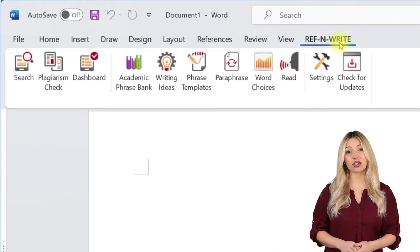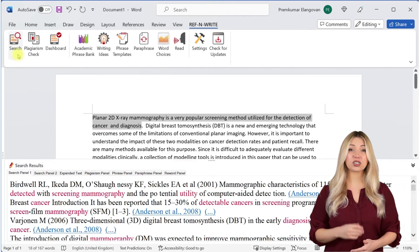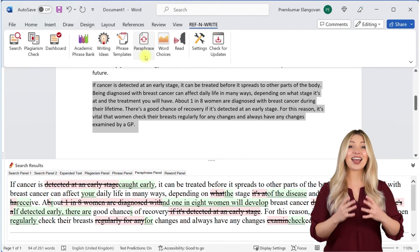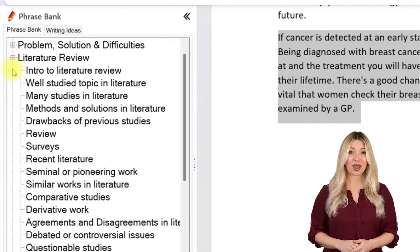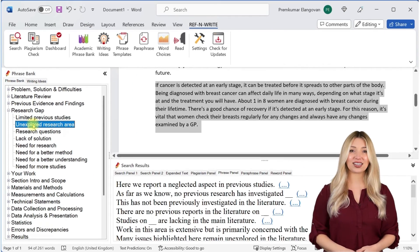If you still haven't installed RefnWrite software, please do it. It comes with referencing tools, plagiarism checkers, proofreading tools, paraphrasing tools, an academic phrase bank, and many other useful features to help you write your research papers and thesis. You can sign up for free using the link below in the description.